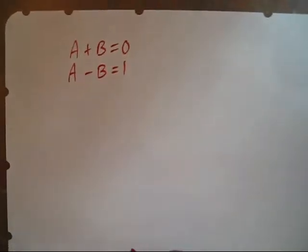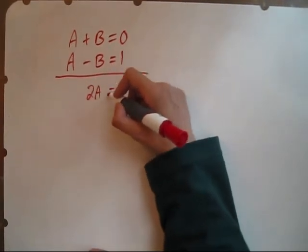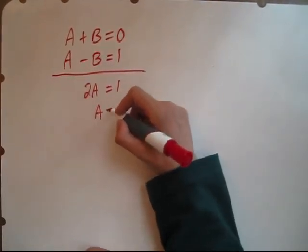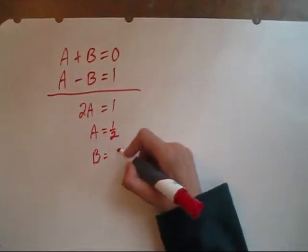So we have a system of equations. In fact, if we add them together, we get 2a equals 1 and a equals 1 half. a plus b equals 0, so that means b has to be negative 1 half.